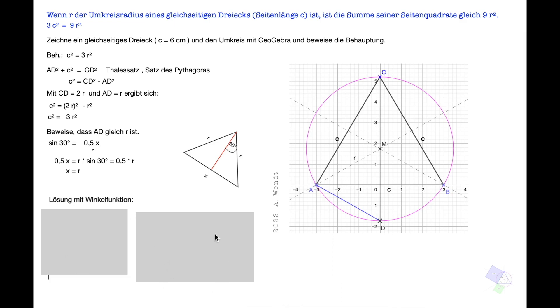Jetzt gibt es hier noch eine zweite Lösung, wie man diesen Satz beweisen kann. Dazu betrachten wir lediglich dieses Dreieck. Da kennen wir ja schon den Winkel. Der war 120 Grad. Der wird durch die Höhe geteilt in 60 Grad und 60 Grad. Und die Grundseite wird auch halbiert.